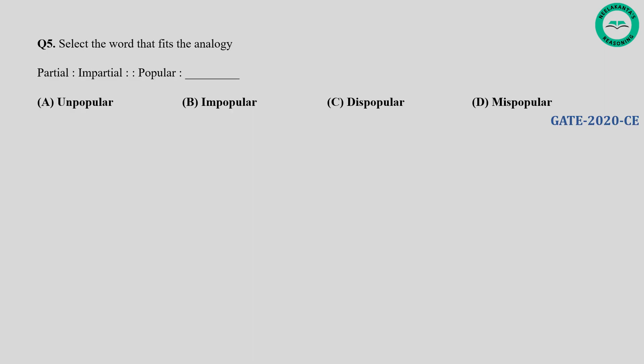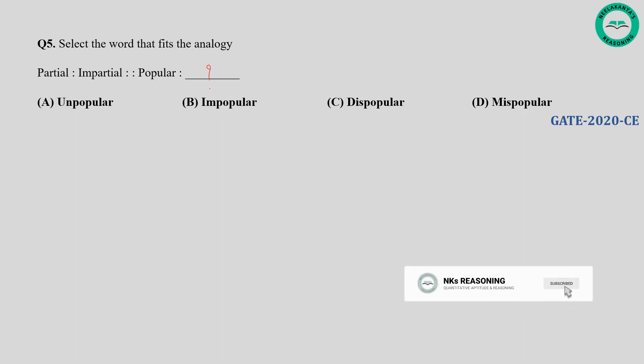Question number five: Select the word that fits the analogy — Partial, Impartial, Popular, blank. The relationship in the first pair is that impartial means not partial. Similarly, the answer should mean not popular, that is unpopular. So option A is the right answer.